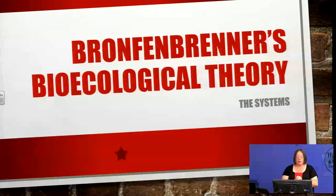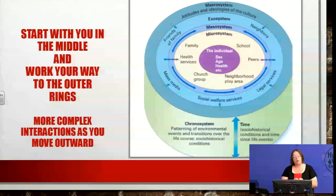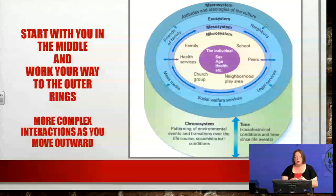Hi, gang. We're going to go over Bronfenbrenner's bioecological theory, go through all the levels, and talk about various details along the way. A key part of Bronfenbrenner's theory is that the person is part of their overall experience. You cannot look at the environment around the individual without considering the individual as part of it. That's why in the picture on the right with all the circles surrounding the individual in the middle, the individual in the middle is key. Pull out the person in the middle, the theory falls apart.